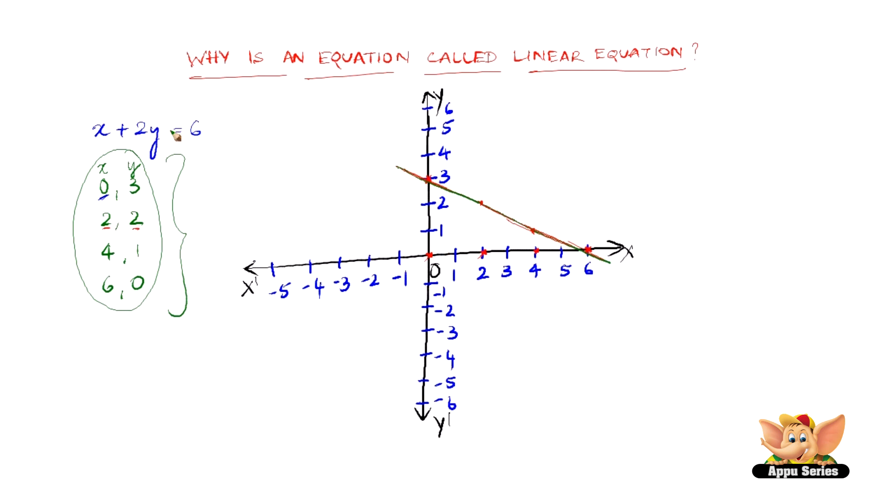What can we conclude from this? In other words, it is nothing but this given linear equation, when represented geometrically like this, it is nothing but a straight line. In other words, all the solutions of this linear equation lie on one straight line. So that is why these kind of equations are called as linear equations.